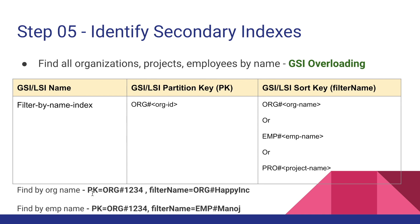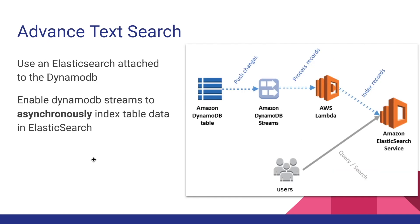We can now issue queries on this GSI. To find an organization by name, query the GSI where the partition key equals org hash 1234 and the filter_name attribute equals org hash happy_ink — without needing the organization ID. Similarly, to find an employee by name, the partition key is org hash 1234 and filter_name equals emp hash Manoj — no employee ID required. This satisfies the name-based search access pattern.